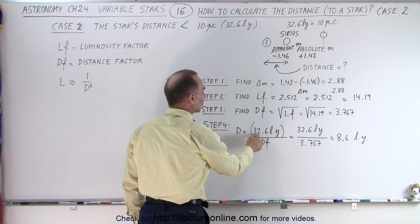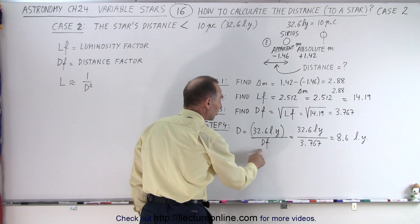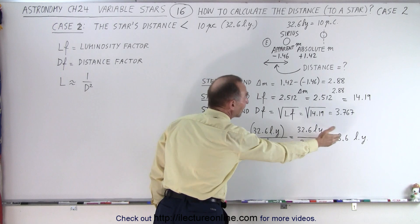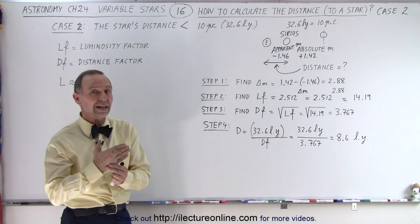So therefore, we take the 32.6 light years, which is a standard distance, and divide it by the distance factor, instead of multiply, and we get 8.6 light years, which means that Sirius is 8.6 light years away, knowing that the apparent magnitude was minus 1.46 and the absolute magnitude was plus 1.42.